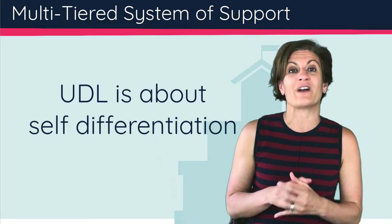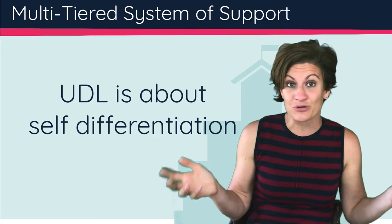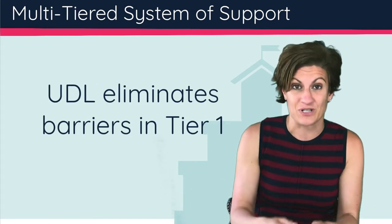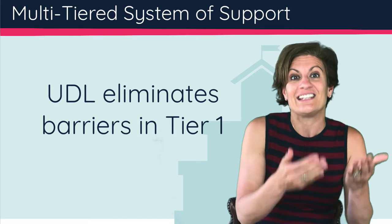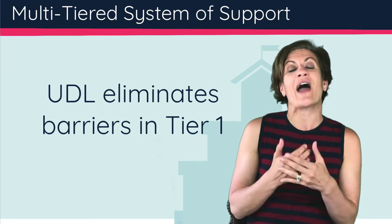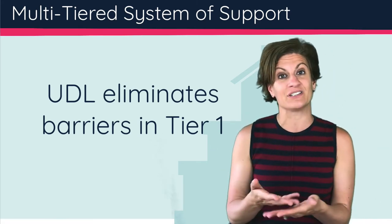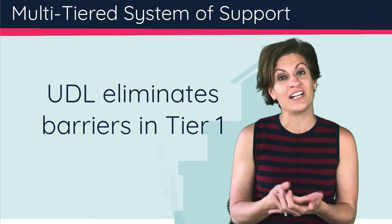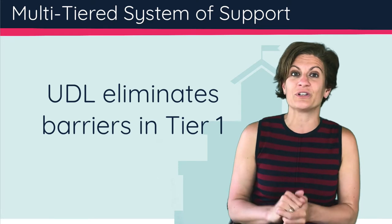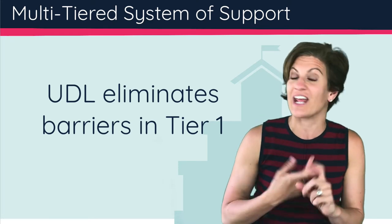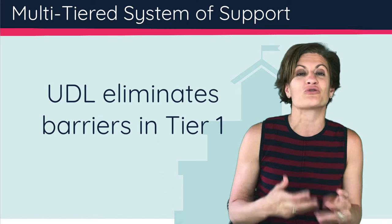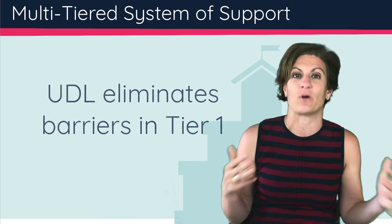As opposed to recognizing that there are absolutely barriers in Tier 1 for all students, and those are predictable. Some students might not get it yet, and some students might have it already. So how can I embed flexibility in the design of teaching and learning so that all students can make choices in Tier 1 and are equally challenged and supported with options and choices that are culturally sustaining and linguistically appropriate?